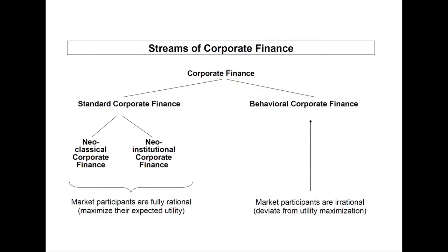Thereby, we could see a consistent path that research in corporate finance has taken over the past decades. This path started with a very simplified and easy-to-handle world, namely neoclassical corporate finance, to generate the basic findings. Based on that, the next job was the fine tuning. This required including more and more sophistications to bring the models closer to reality. First, researchers added market imperfections — this was done by the models of neo-institutional corporate finance. In a second step, in a relatively recent extension, researchers added irrationality, which created the stream of behavioral corporate finance. All together, this wide horizon of corporate finance provides a very comprehensive toolkit that allows us to explain a lot of phenomena that we can observe in practical corporate finance.